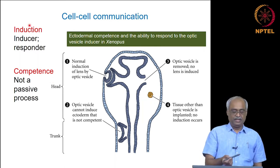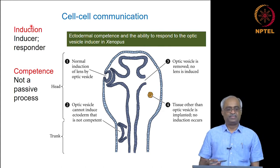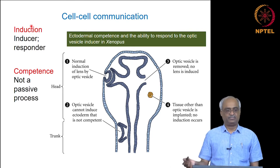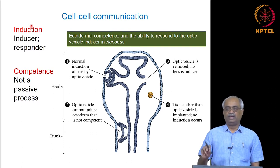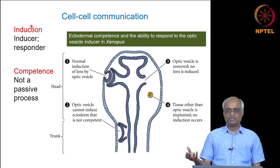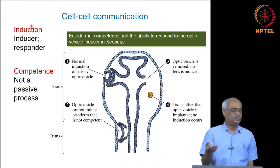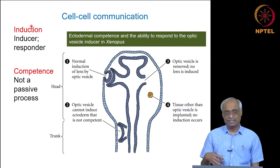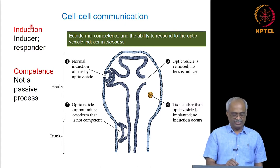What is an inducer? An inducer is a molecule produced by cells that induces other cells to adopt a certain fate. Without a certain neighboring cell, a given cell may not differentiate in a certain way. Those neighboring cells are the inducers, and a cell will not be able to respond to those inducers unless it has the competence — for example, the receptor for those signals coming from the neighboring cells. That is called competence.